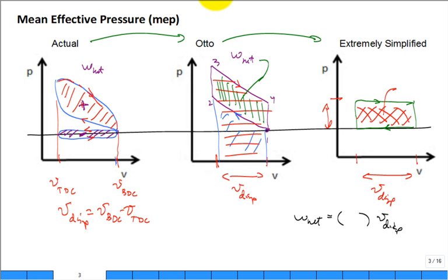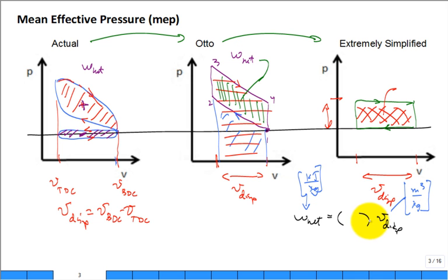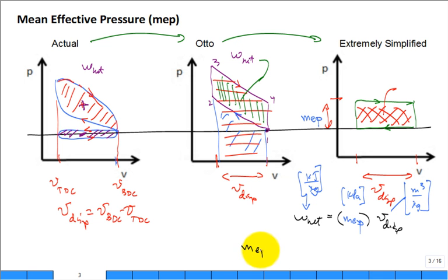The preferred units for specific net work w_net are kilojoules per kilogram, the volume is in cubic meters per kilogram, and pressure in kilopascals. This is what they call the mean effective pressure — it's one pressure representing the average difference between the compression pressure and the expansion pressure. So the definition of mean effective pressure is net work divided by the displacement volume. Most of the time we work in specific work and specific volumes.